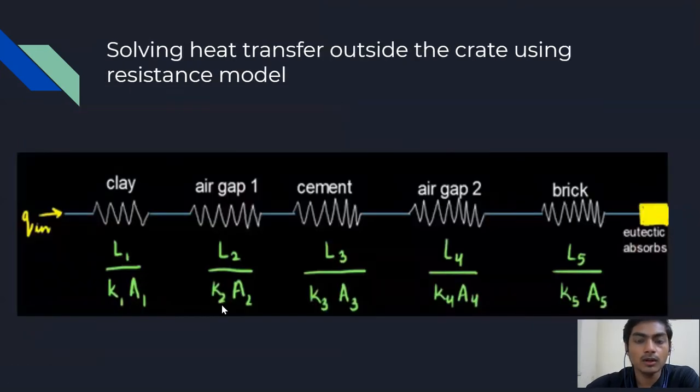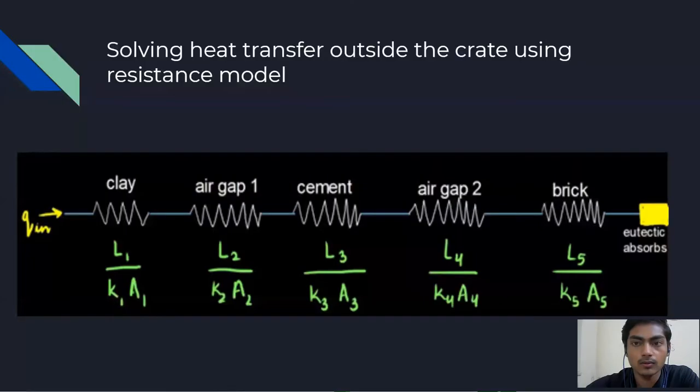Now, we will solve our heat transfer problem with the resistance model. Heat is coming from this direction and all the resistances are shown in this figure: the air gap between clay and cement, cement, air gap between cement and brick, and then brick, and the eutectic air gap absorbs all heat that is transmitted into it.